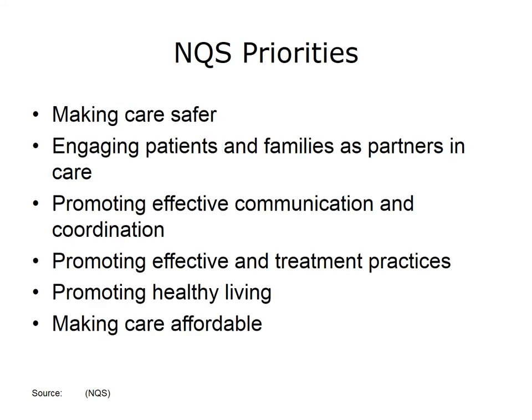The NQS is operationalized through a series of priorities and strategy levers. The priorities include making care safer by reducing harm caused in the delivery of care; ensuring that each person and family is engaged as partners in their care; promoting effective communication and coordination of care; promoting the most effective prevention and treatment practices for the leading causes of mortality, starting with cardiovascular disease; working with communities to promote wide use of best practices to enable healthy living; and making quality care more affordable for individuals, families, employers, and governments by developing and spreading new healthcare delivery models.